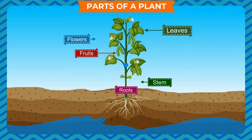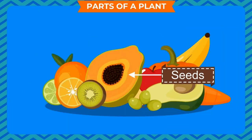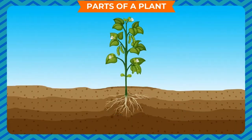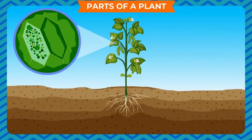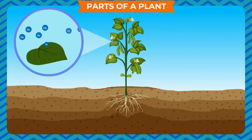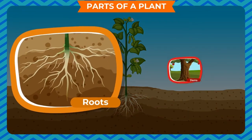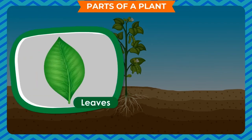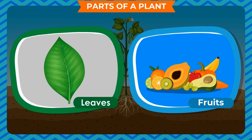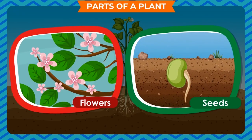The Root is present below the ground and fixes the plant to the soil. It also absorbs water and minerals from the soil. Seeds are tiny structures from which a new plant grows. Green plants contain a green pigment called chlorophyll in their leaves. Carbon dioxide, sunlight, water, and chlorophyll are required to prepare food for the plant. The plant stores this food in its roots, stems, leaves, fruits, flowers, and seeds.